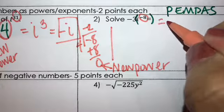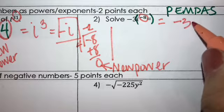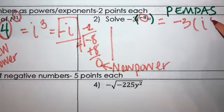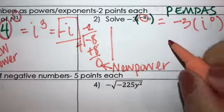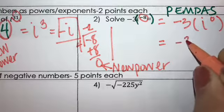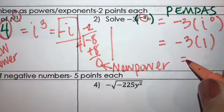It equals negative 3 times i to the 0 power, and then negative 3 times 1 equals negative 3.